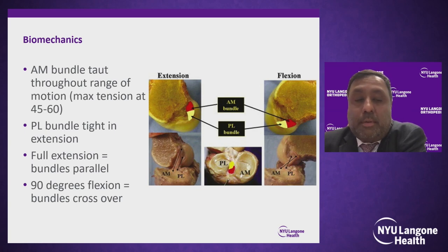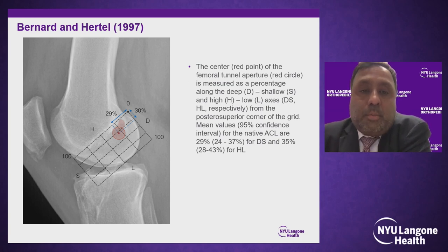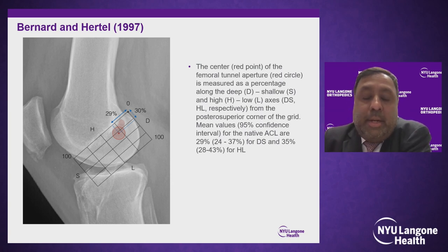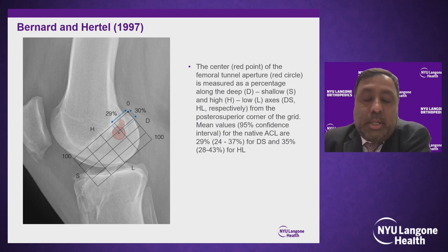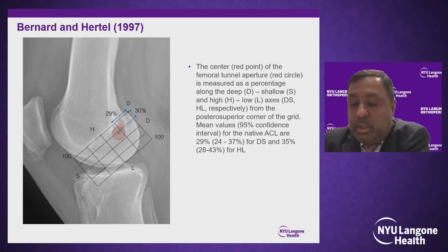These bundles are named after their insertions onto the tibia, not on the femur. The anteromedial bundle is taut throughout the full range of motion, whereas the posterolateral bundle, more important for lateral rotation, tightens in extension. When critically evaluating femoral tunnel placement, it's useful to utilize a grid first described by Bernard and Hertel in 1997. This grid has axes for high and low on the Y-axis and deep and shallow on the X-axis — approximately 30% shallow and 30% low represents the anatomic tunnel placement.